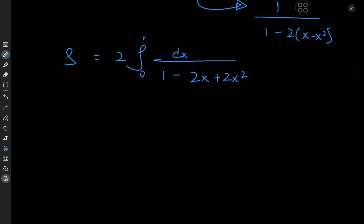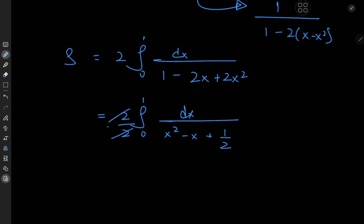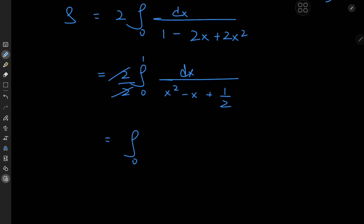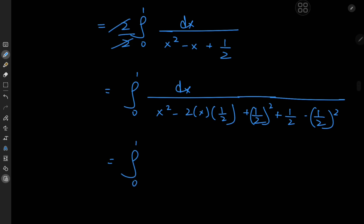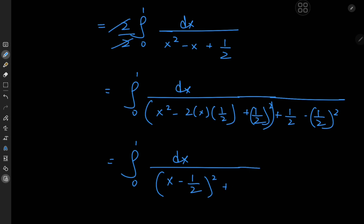So my summation problem is now a very simple integration problem. I'm going to write this as 2 times the integral from 0 to 1 of dx divided by — we have 2x squared here, so let me factor out a 2. I'm left with x squared minus x plus 1 half, with some cancellation. All that's left is to complete the square in the denominator. So I have dx divided by x squared minus 2 times x times 1 half plus 1 half squared. We already have this 1 half here, so minus 1 half squared over there as well to balance things out. That means the integral from 0 to 1 of dx divided by x minus 1 half squared plus 1 quarter.